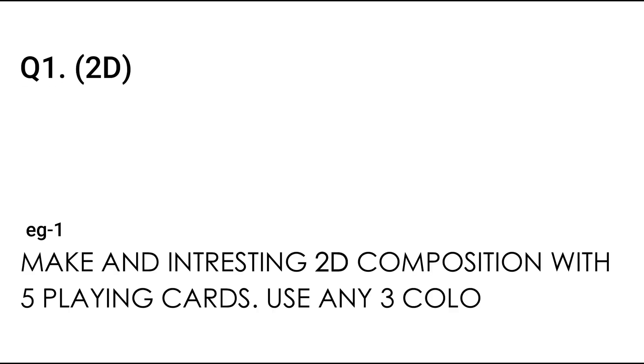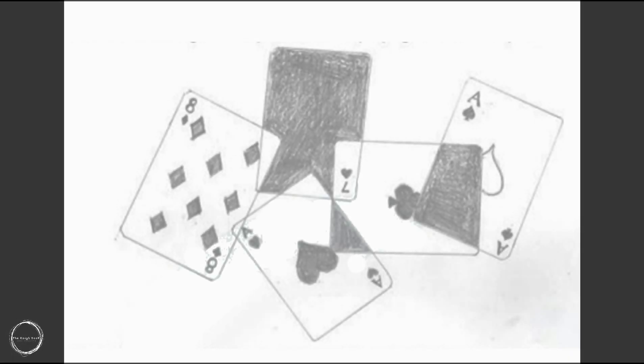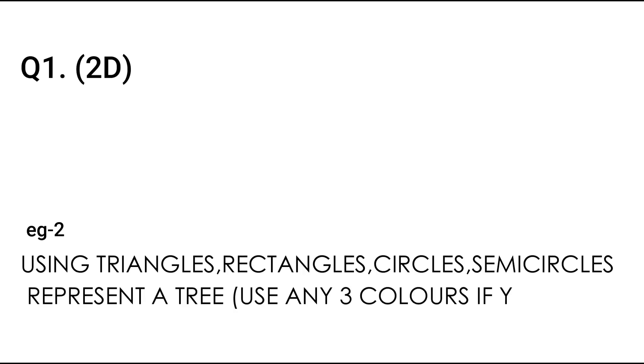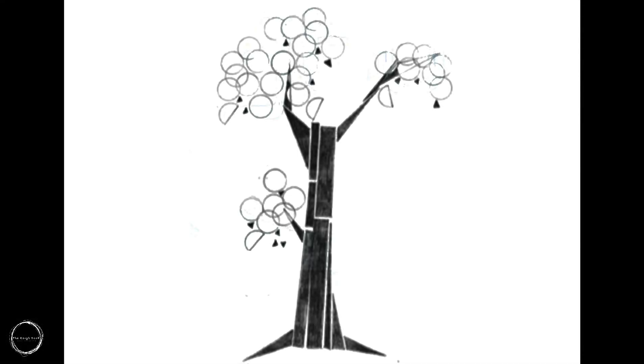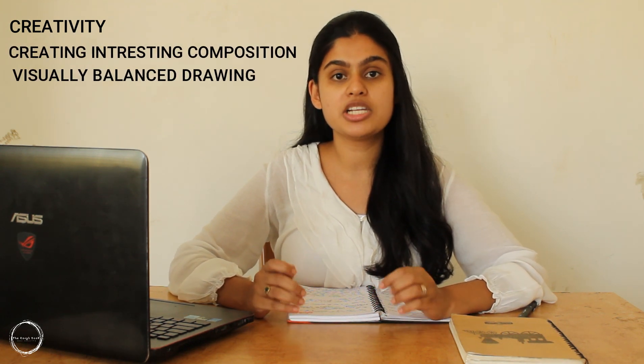The 35 marks questions are live. For example: 'Make an interesting 2D composition with five playing cards, use any three colors.' The next question is: 'Using triangles, rectangles, circles, semicircles, and squares, represent a tree — use any three colors if you wish.' In this 2D question, your creativity, creating an interesting composition, and a visually balanced drawing is expected.